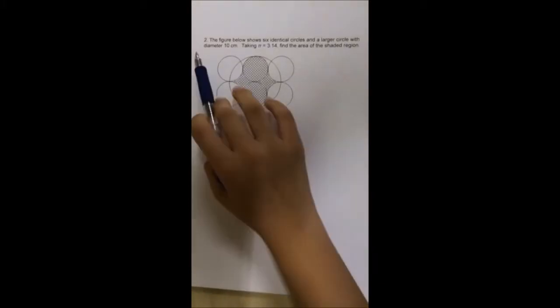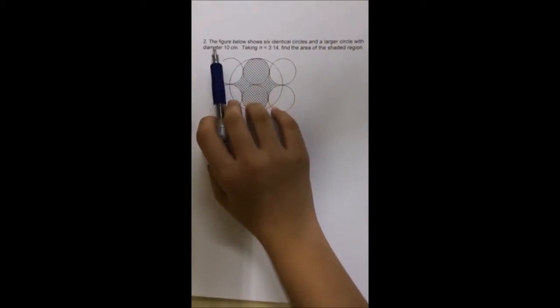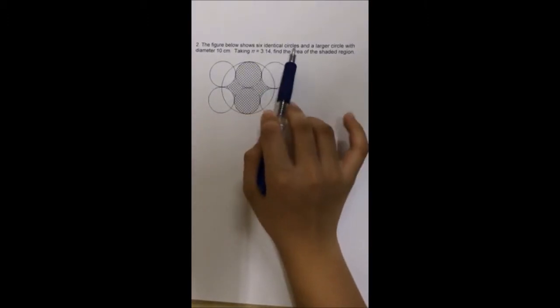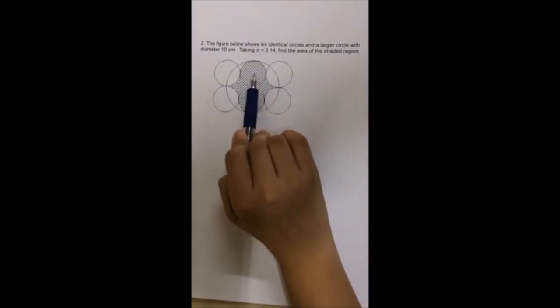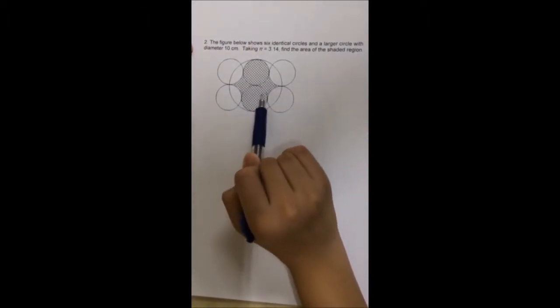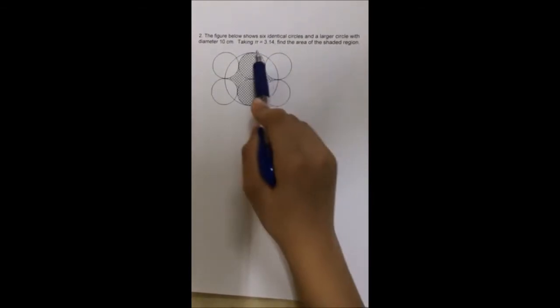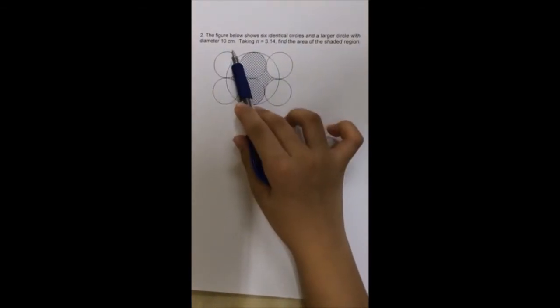The question I am doing is question 2. The figure below shows 6 identical circles: 1, 2, 3, 4, 5, 6, and a larger circle with a diameter of 10 cm.